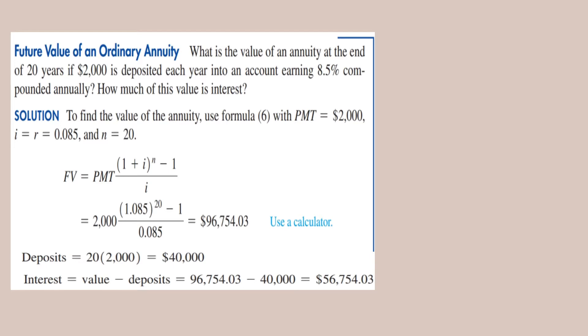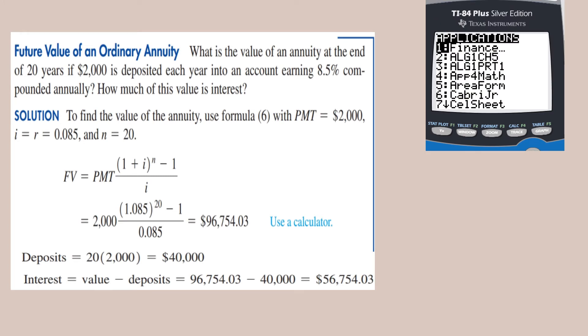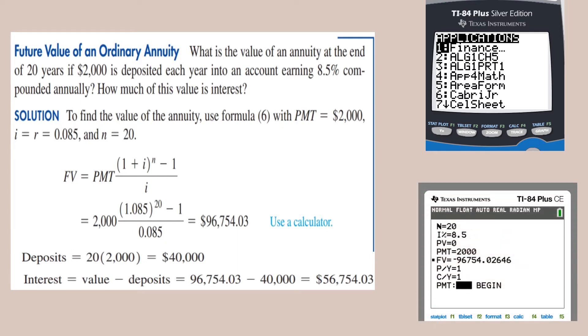We can also use a calculator. We can use the finance mode under the applications. If we select Finance, then under this I can substitute: n is equal to 20, i is 8.5, the principal value is 0, but the payment is 2,000, and it's paid annually, so payment per year and compounding per year is 1. So let's move the cursor to future value and then select second enter, which will give you the calculation. The answer for it is negative $96,754.03. Since it is going out, it is given as a negative.